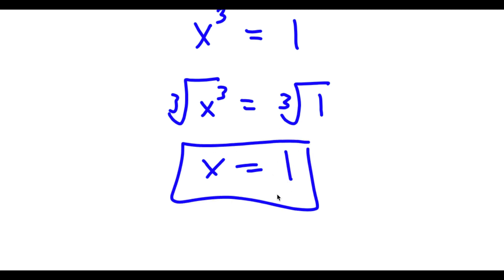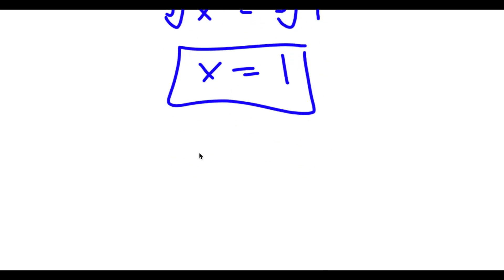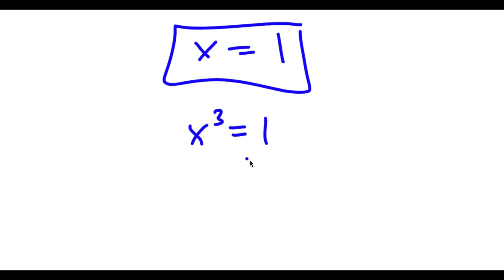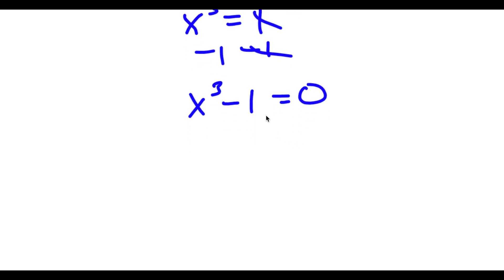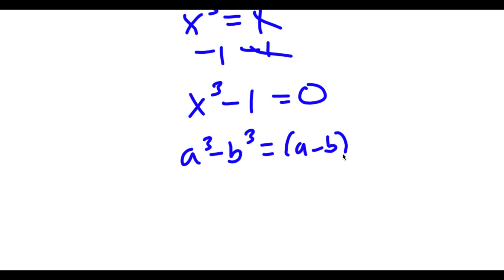So we already have one solution of x. Now I'm going to get more solutions. This time I'm actually going to subtract 1 on both sides, so I get x to the power of 3 minus 1 is equal to 0. And if I have something in the form a³ minus b³, this is equal to (a minus b)(a² plus ab plus b²).